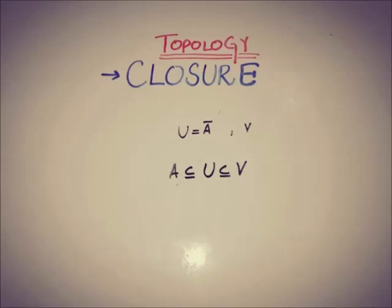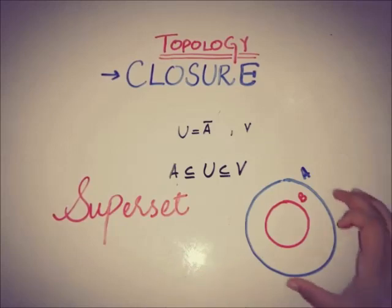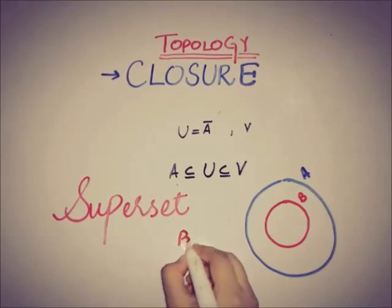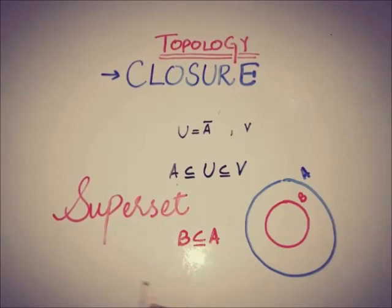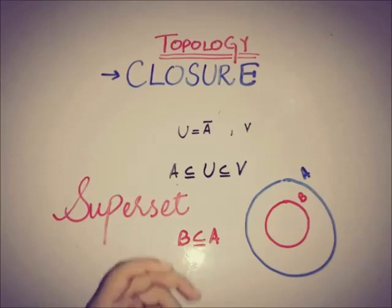We can also say that U is a superset of A. A superset is a set that includes another set. If A and B are sets and A contains B, then A is a superset of B and B is a subset of A — these are equivalent definitions.